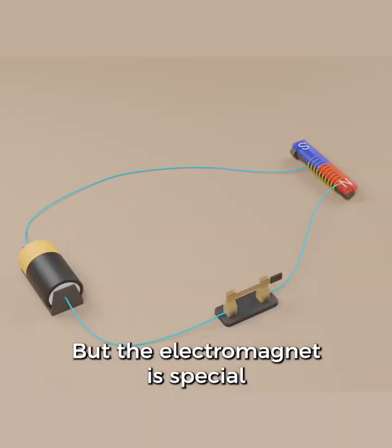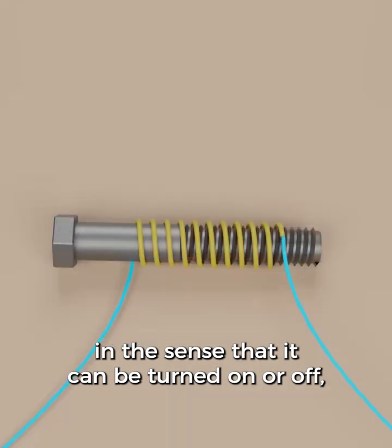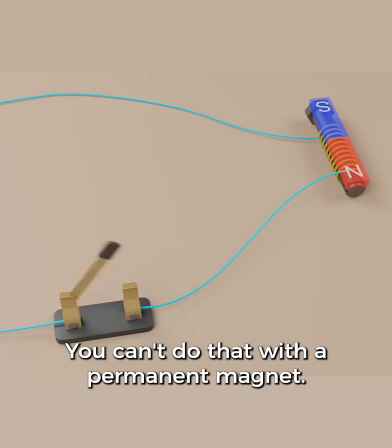But the electromagnet is special in the sense that it can be turned on or off, just like the light bulb. You can't do that with a permanent magnet.